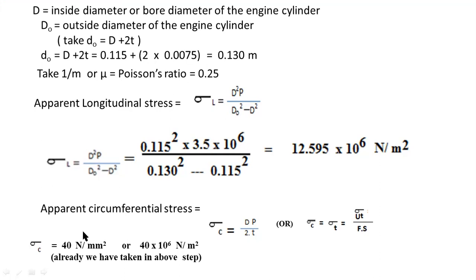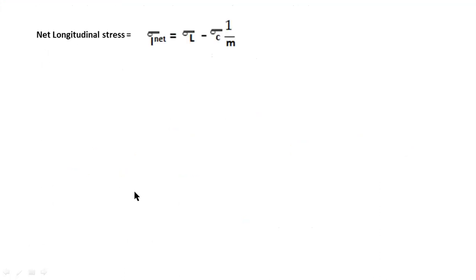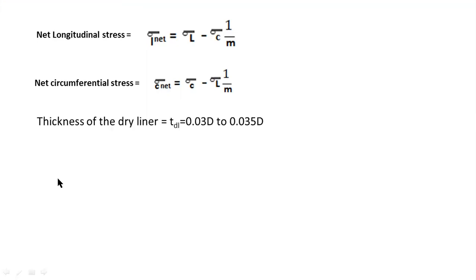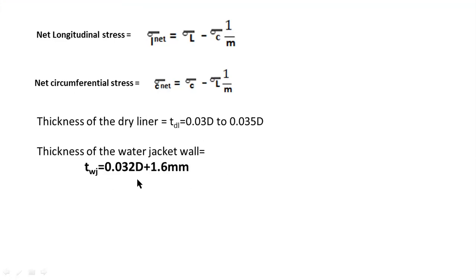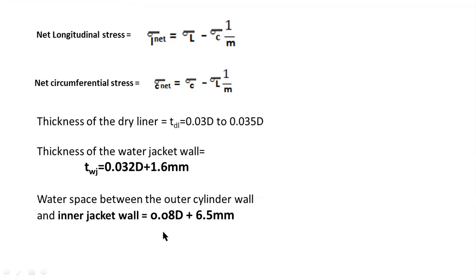After finding the apparent stresses, find the net stresses. Net longitudinal stress σL_net = σL − (1/m) × σC. Net circumferential stress σC_net = σC − (1/m) × σL, where 1/m is Poisson's ratio. These are the two formulas for net stresses in the cylinder material. Then find the thickness of the dry liner and the water jacket wall thickness, and the space between the outer cylinder wall and inner jacket wall using the respective formulas.